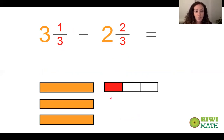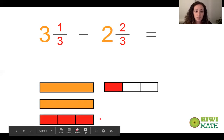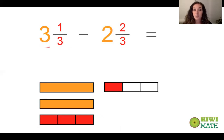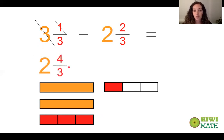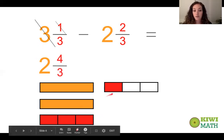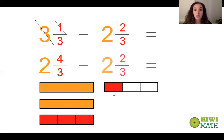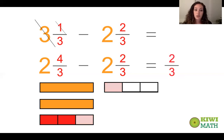So we're going to trade in one whole for three thirds. This changes what our mixed number looks like: instead of three wholes we have two wholes, and instead of one third we have four thirds — one third, two thirds, three thirds, four thirds. Now we have enough to subtract. Four thirds minus two thirds is two thirds, and two minus two is zero. So our answer is two thirds.